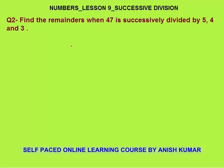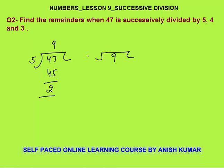Second question: find the remainders when 47 is successively divided by 5, 4, and 3. First I will divide 47 by 5 — the first divisor. 5 times 9 is 45, so the remainder is 2. Now very importantly, the first quotient 9 becomes the number or dividend for the second division. Next divisor is 4: 4 times 2 is 8, so the remainder is 1.